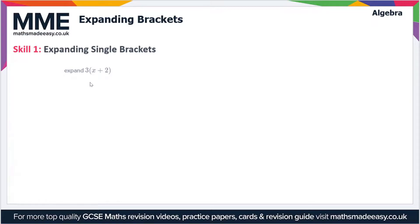In this example we have to expand 3(x+2). The method that we use for expanding brackets is we multiply the 3 by the x and the 3 by the 2 separately, so we get 3 times x and 3 times 2.